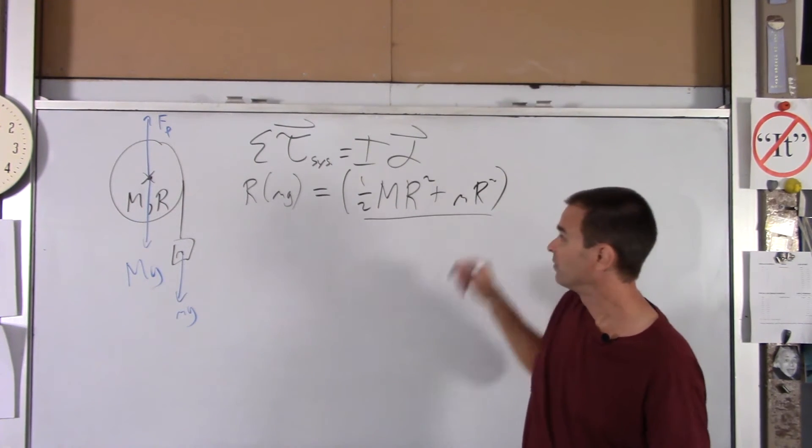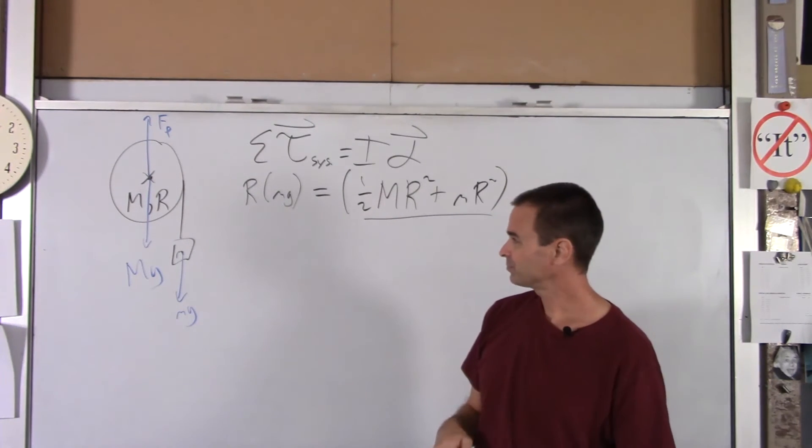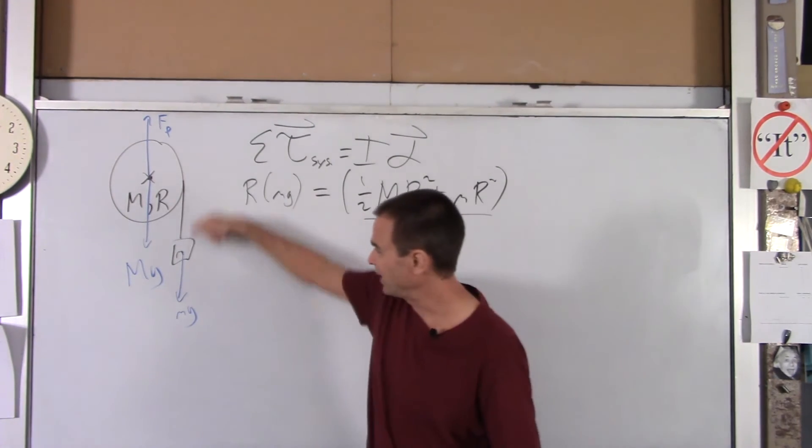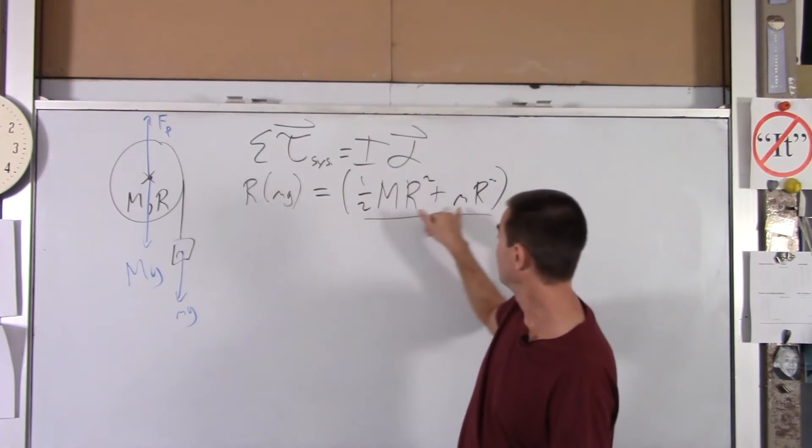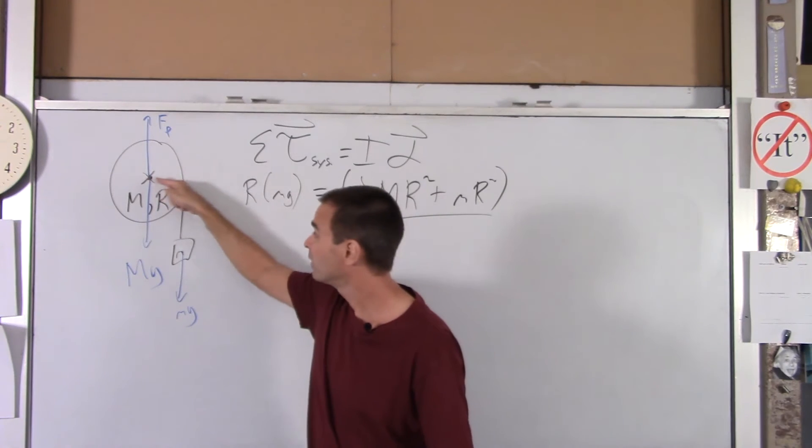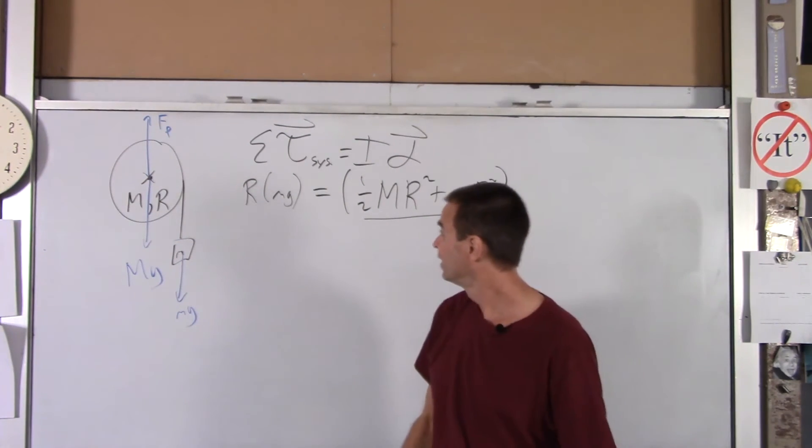That is the moment of inertia of your system. And again, you treat anything moving linearly like a point mass. Its radius is the perpendicular lever arm from the axis of rotation. And we got alpha.